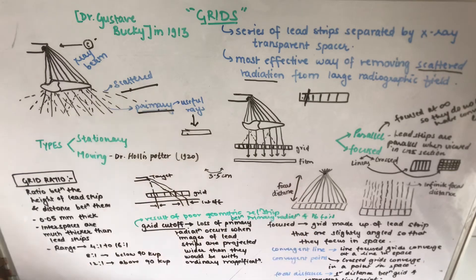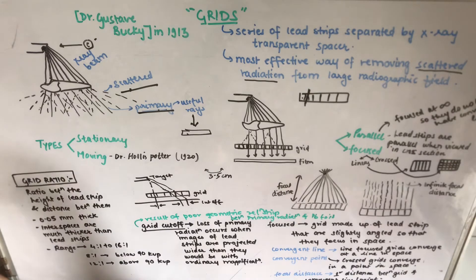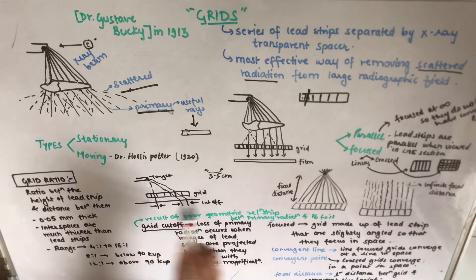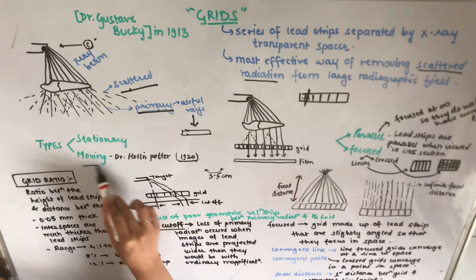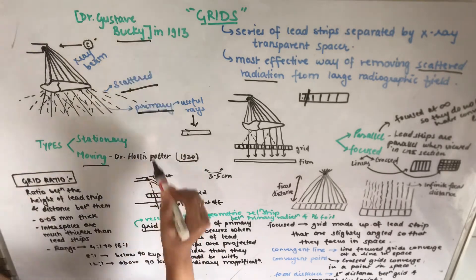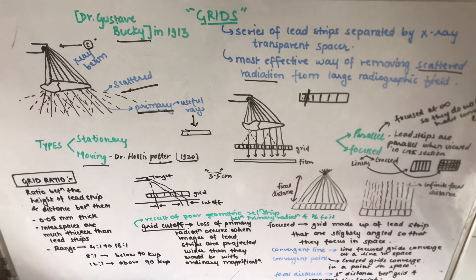There are two types of grids: stationary and moving. Stationary grids are stable and are built into the tube side of the cassette. Moving grids, as the name suggests, are not stationary — this type was introduced by Dr. Hollis Potter in 1920, and is therefore known as the Potter-Bucky grid.